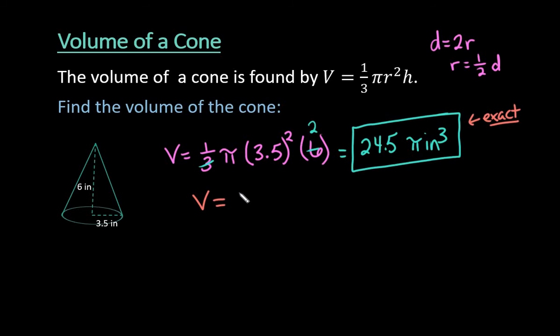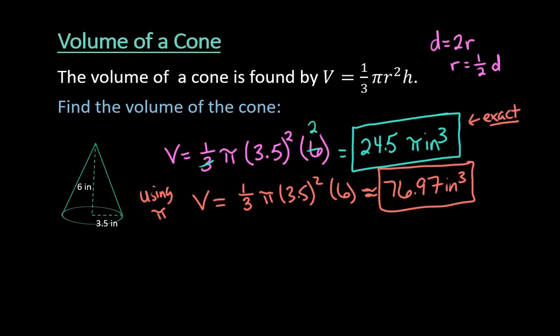If you want an approximate value where you use the pi button in your calculator, you could just go through and plug this into your calculator. And when you use the pi button on your calculator, depending upon your calculator, it can be in various places, but any scientific calculator will have pi programmed into it. And normally they program it to about 13 floating points, which is why you get a different answer. So this ends up being approximately 76.97 inches cubed.